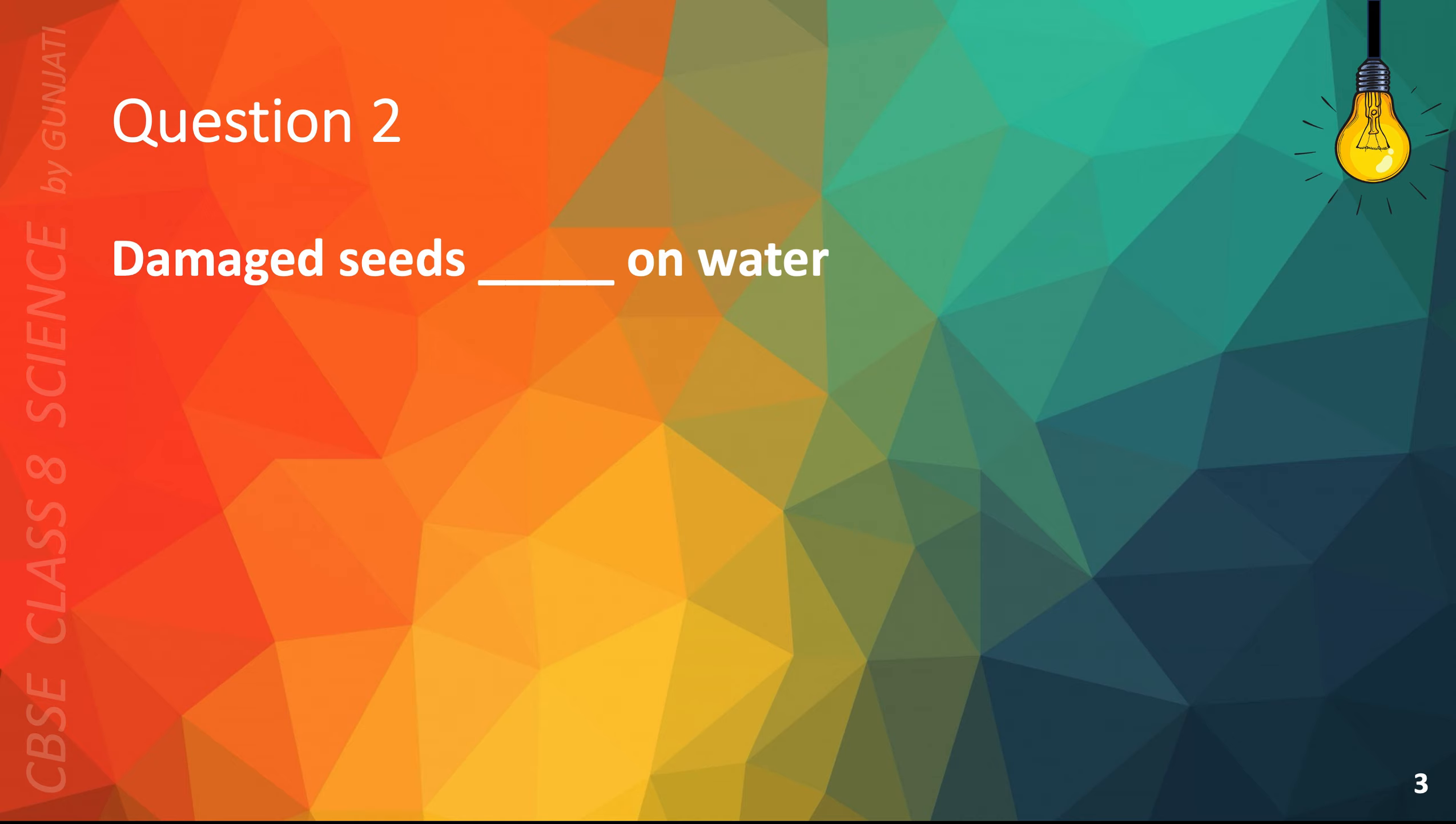Question 2. Damaged seeds blank on water. A float, B sink, C disappear, or D all of the above. The correct answer is A float.